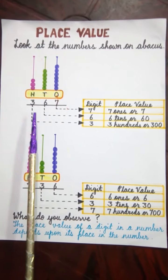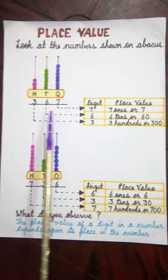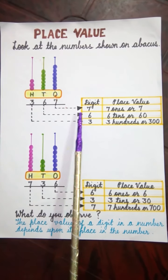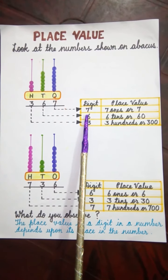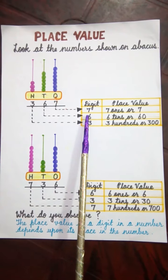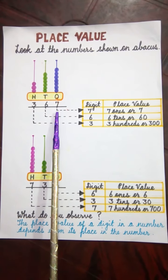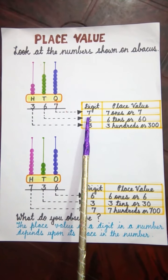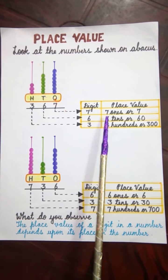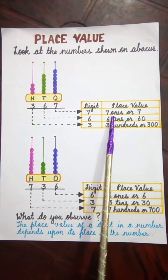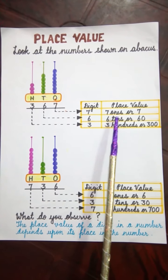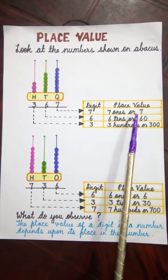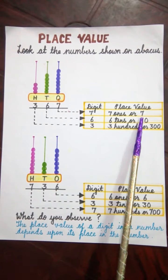Now what is the place value of these digits? The place value of 7 — as 7 is in the 1's place — so the place value of 7 is 7 ones. That means 7 multiplied by 1 is equal to 7.